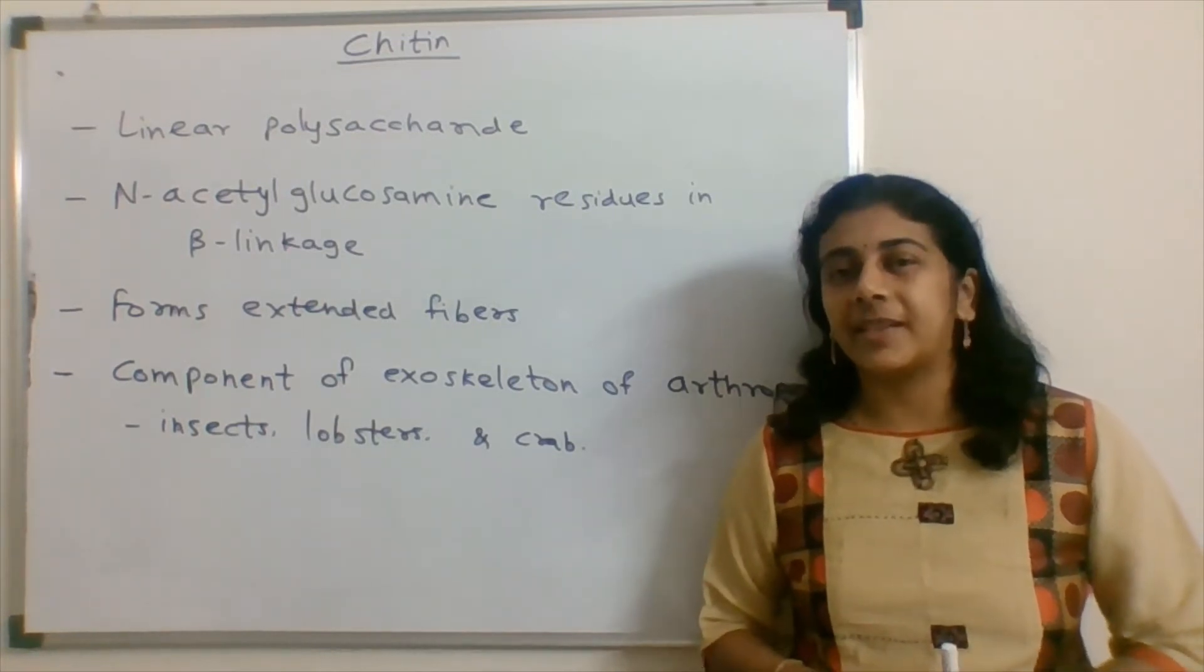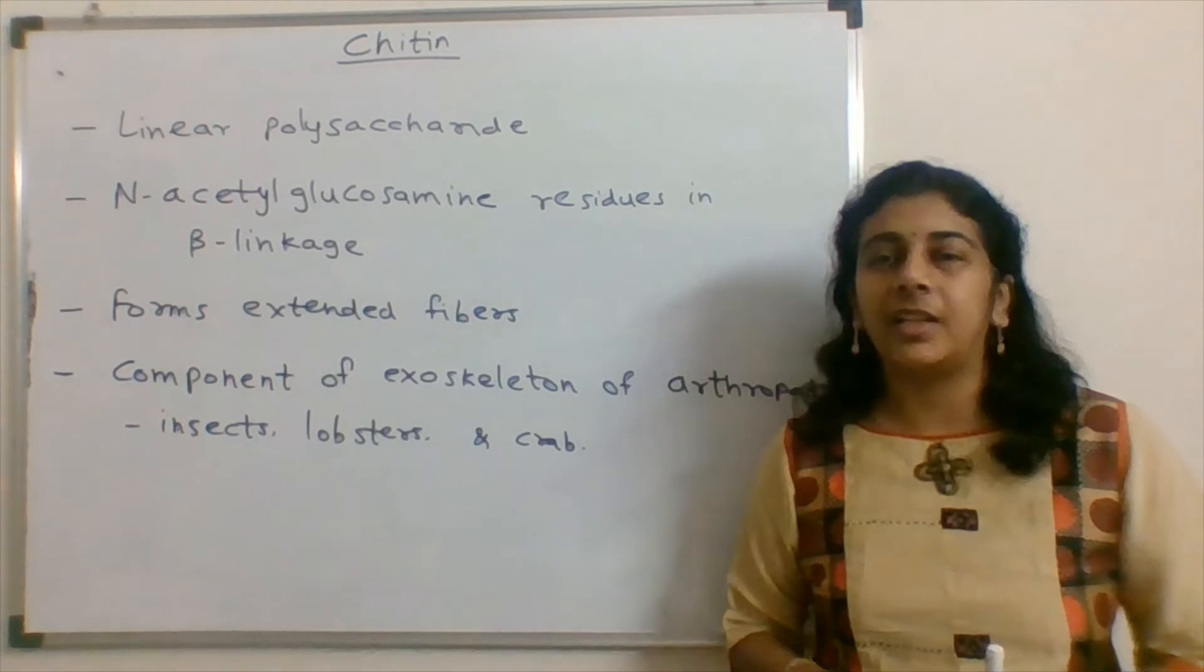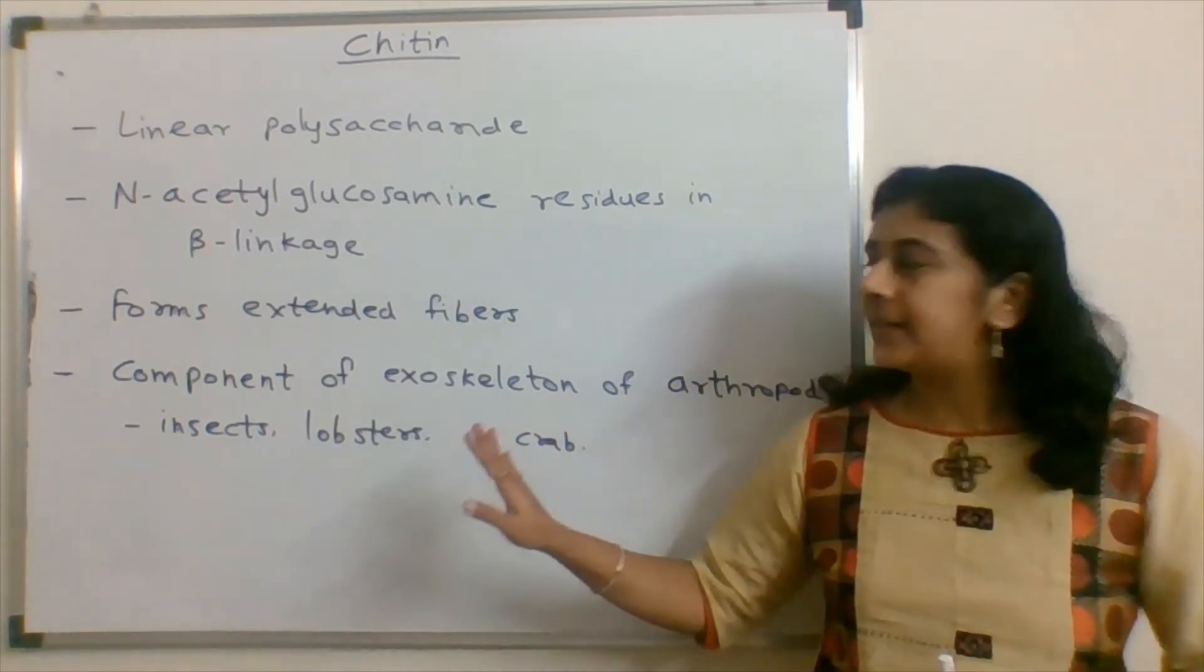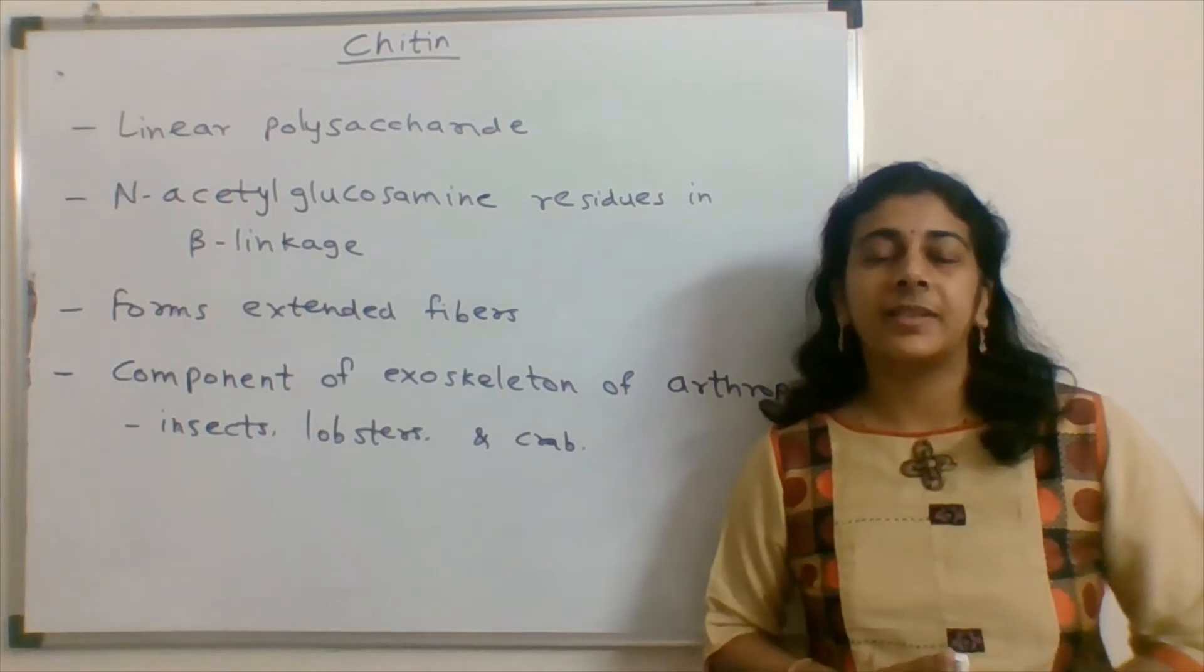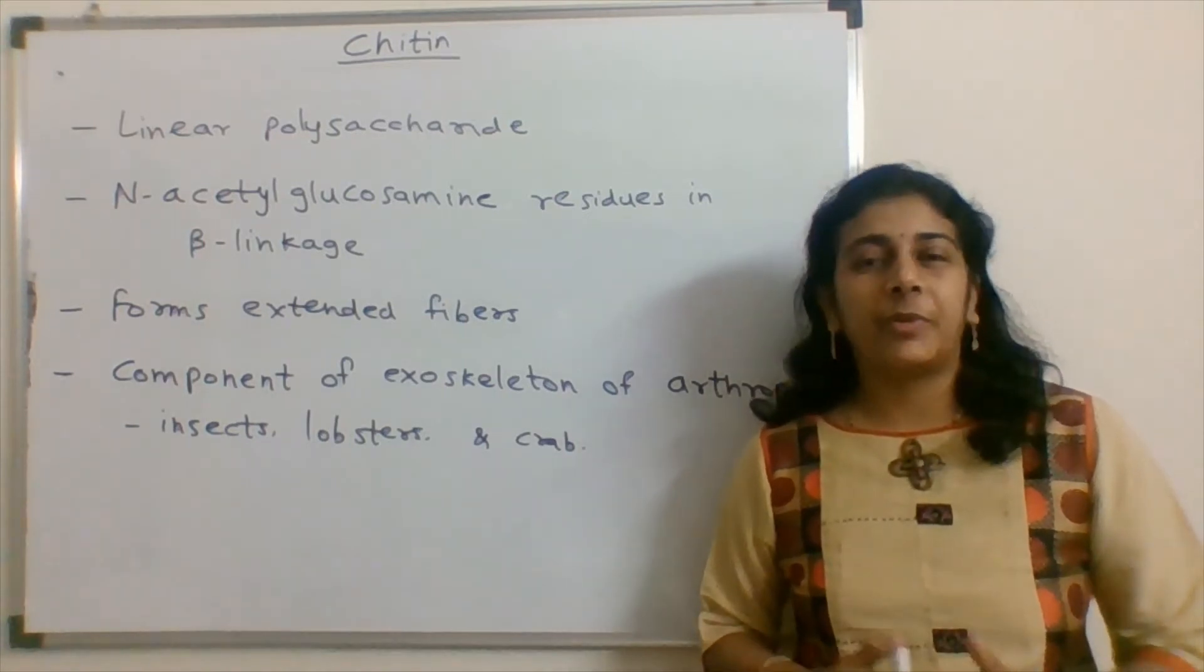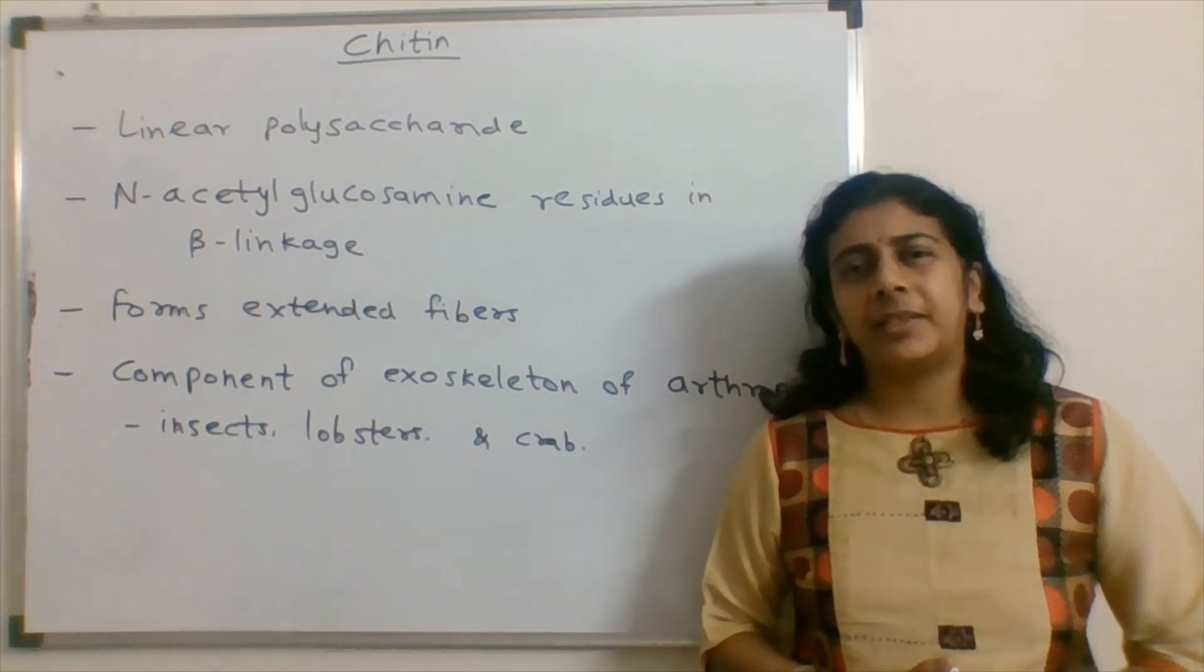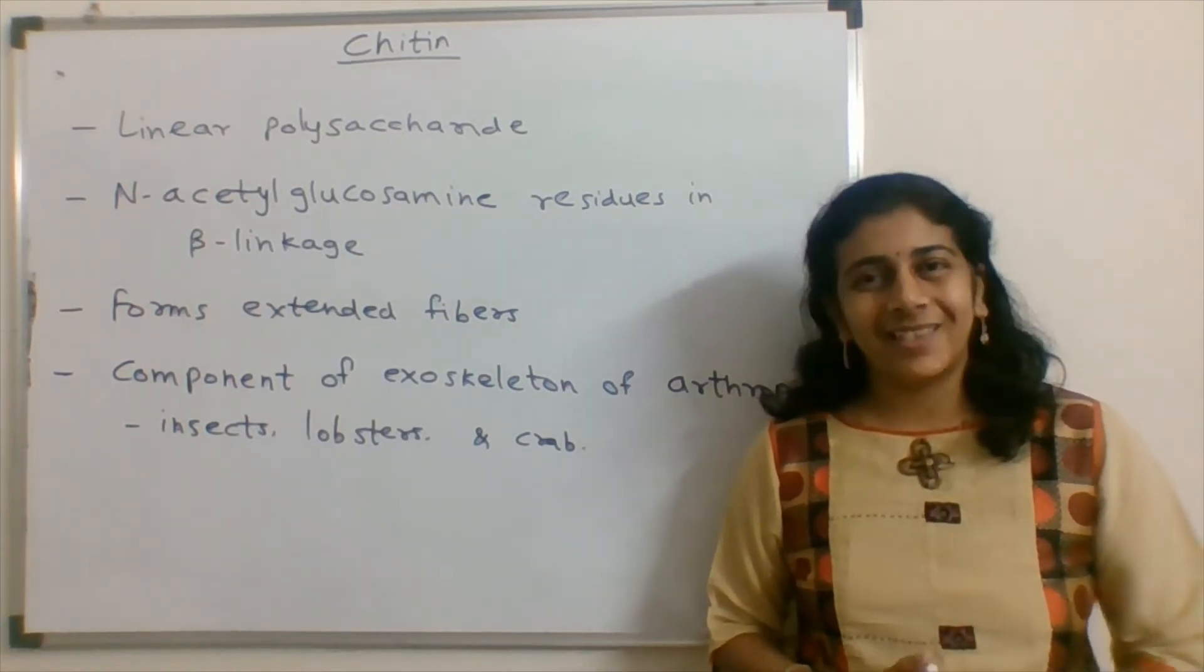As we know, chitin is present in the exoskeleton of the arthropods—in insects, in lobsters, in crabs. The exoskeleton is made up of chitin. It is the second most abundant polysaccharide after cellulose.